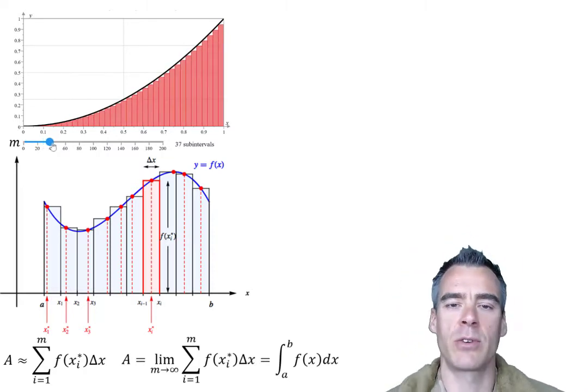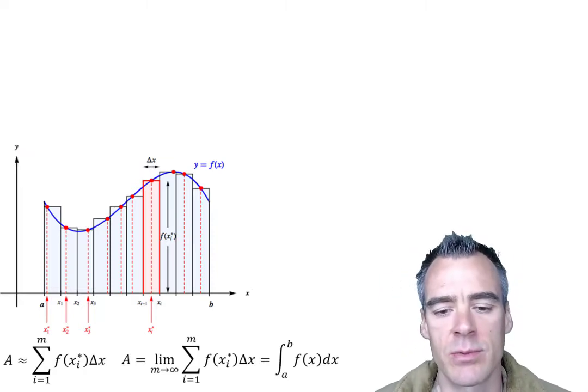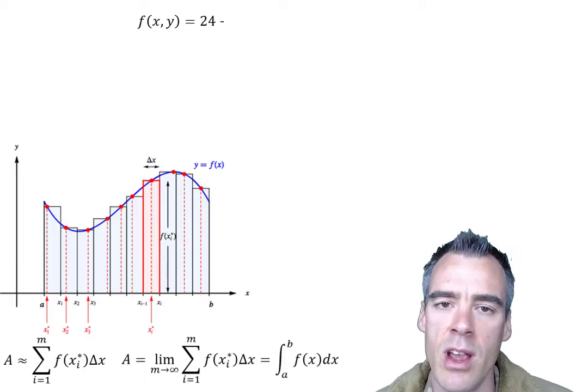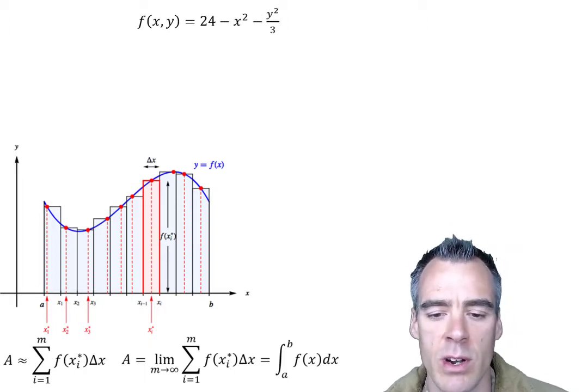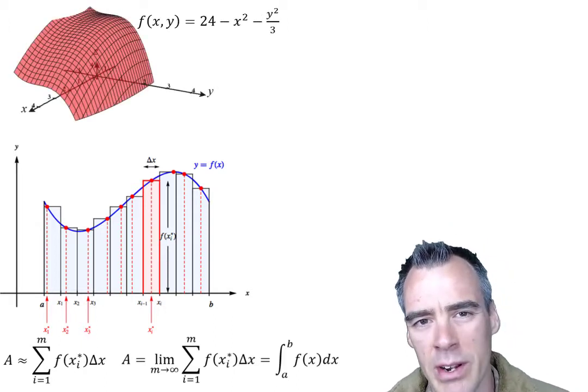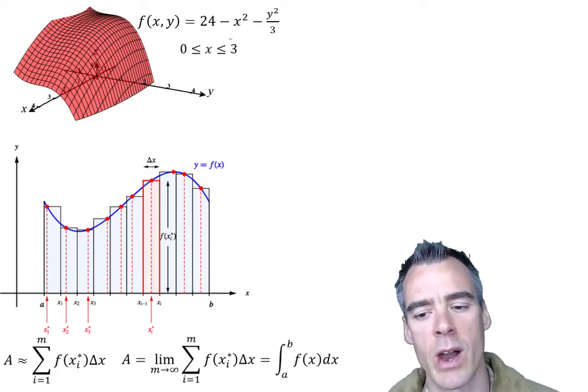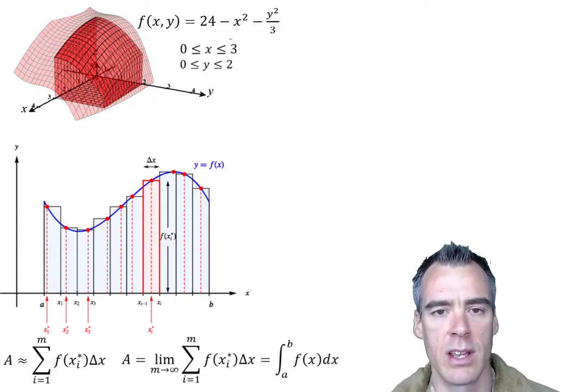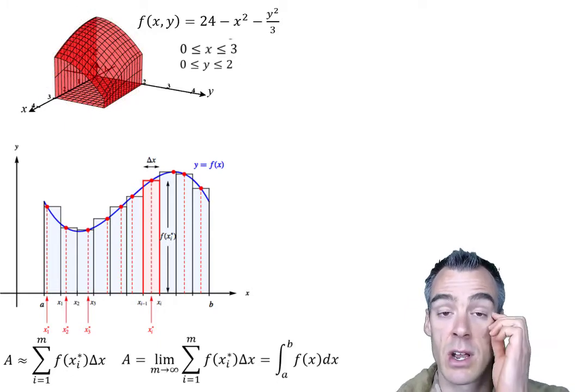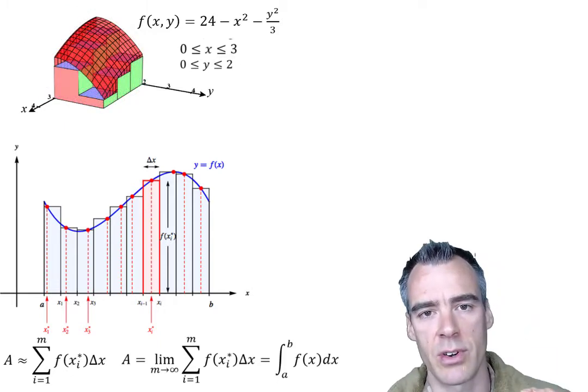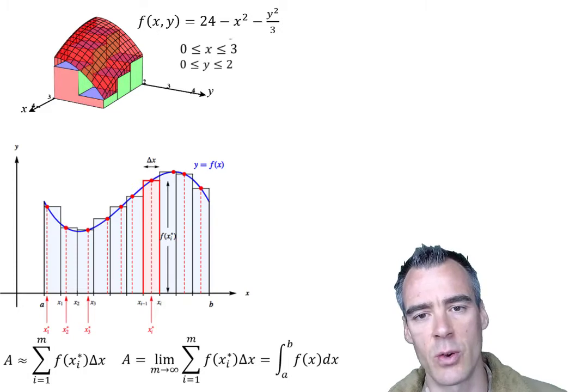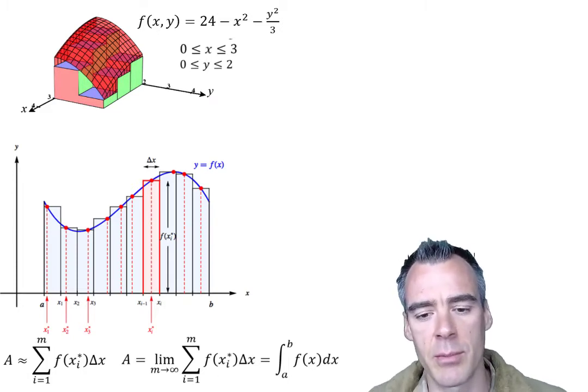So back to our surface that we have, we have our surface was a function of two variables, x and y, and it was 24 minus x squared minus y squared over 3. And we wanted to define the volume of this where x range between 0 and 3, and our y range between 0 and 2. And we ended up with six columns here. So let's go ahead and transfer what we did in that last video into a Riemann sum form, and we can move on from there.